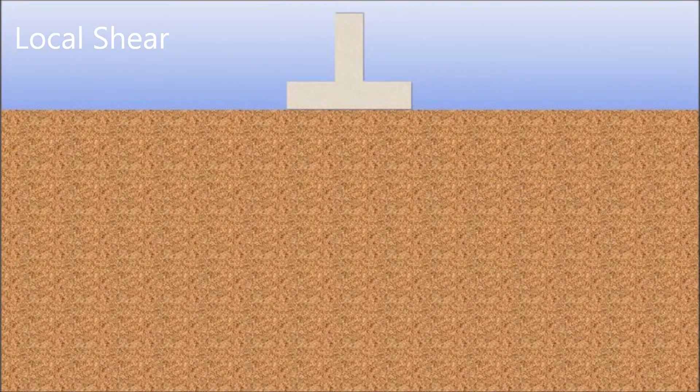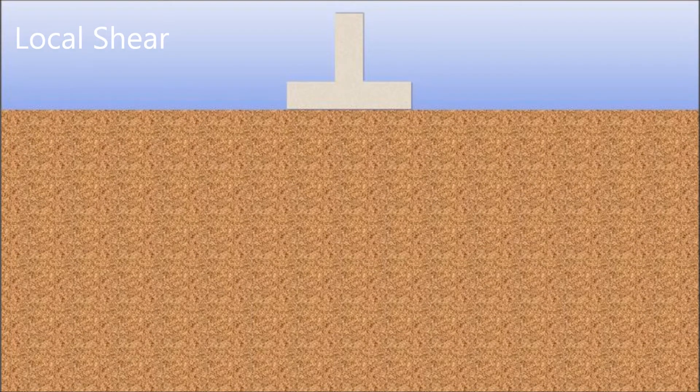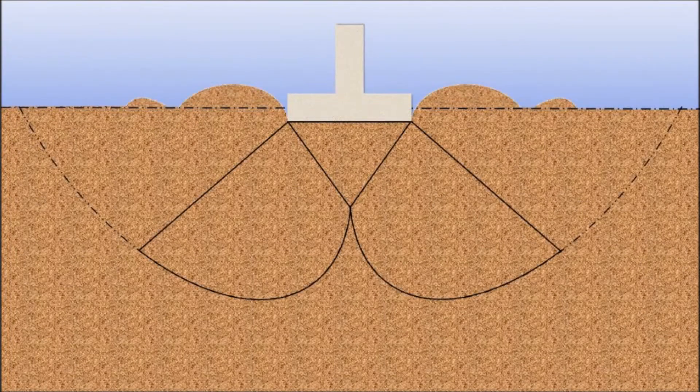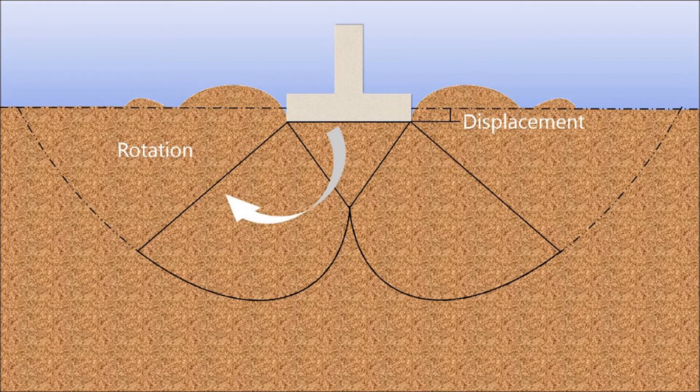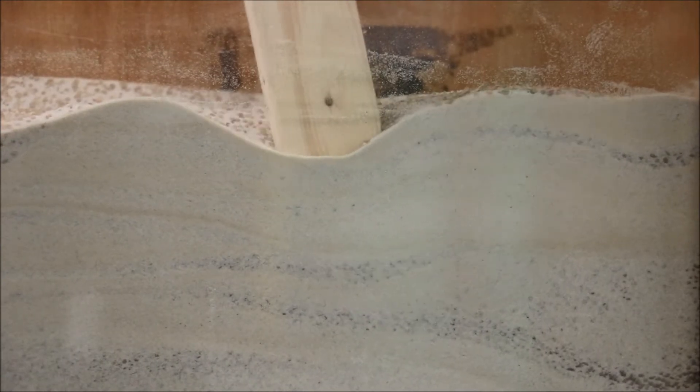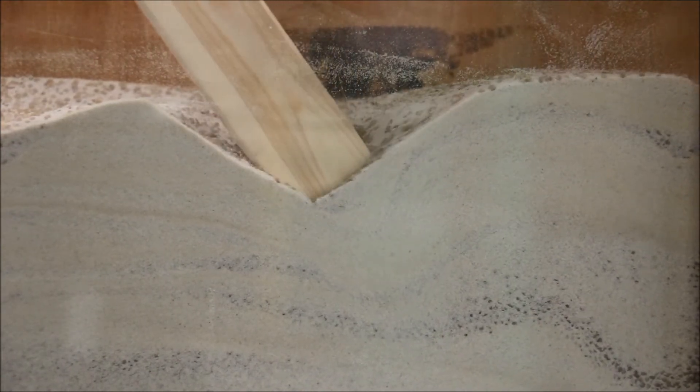Local shear failure occurs in cohesionless and loose to medium dense soils. This failure mode has a well-defined shear surface directly under the footing that may or may not be seen at the surface of the soil. Local shear failure happens gradually as the footing continues to experience settlement and movement along the shear plane.